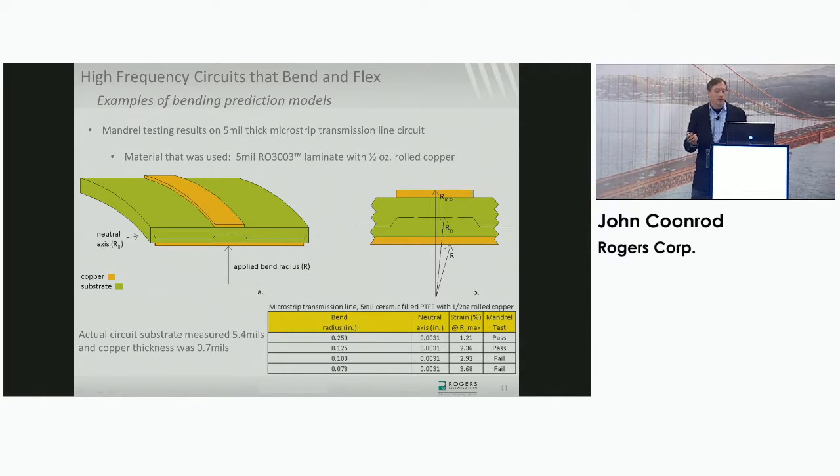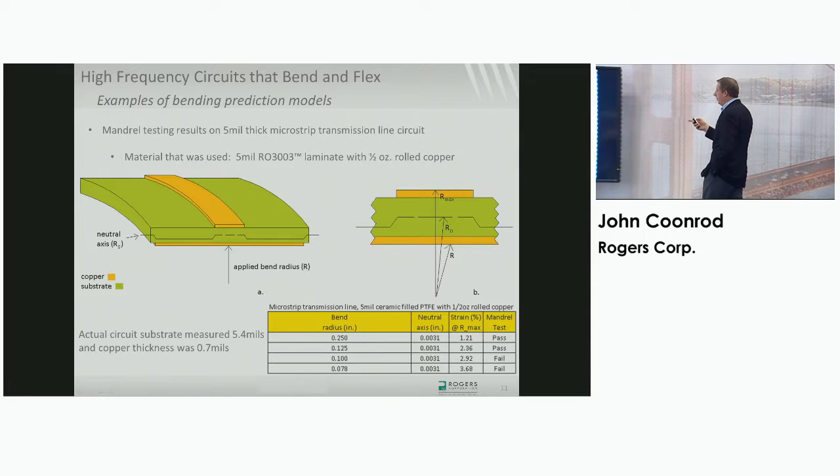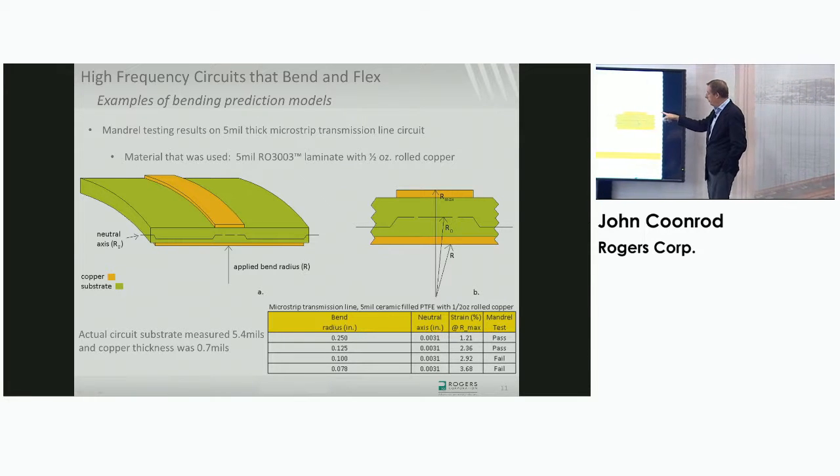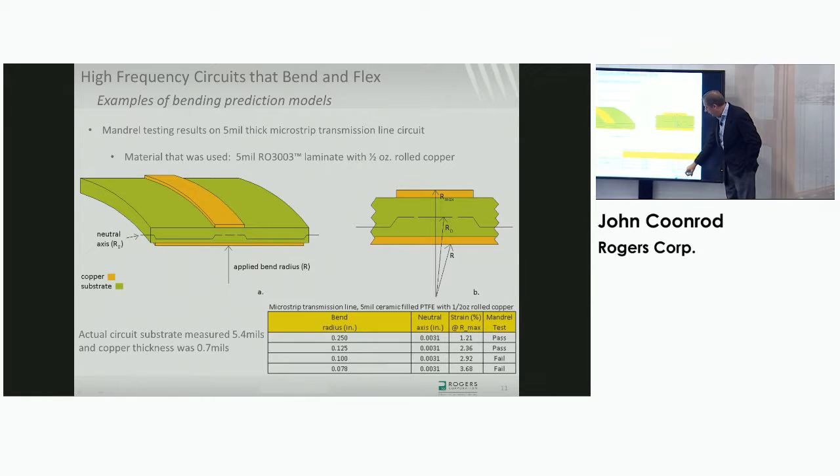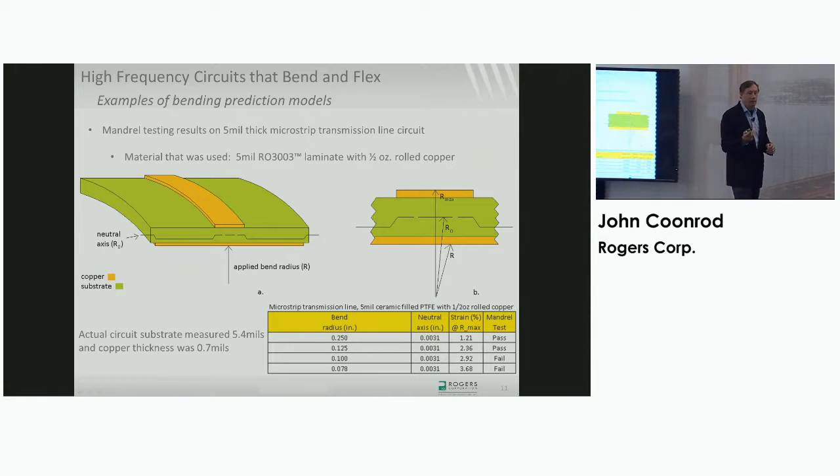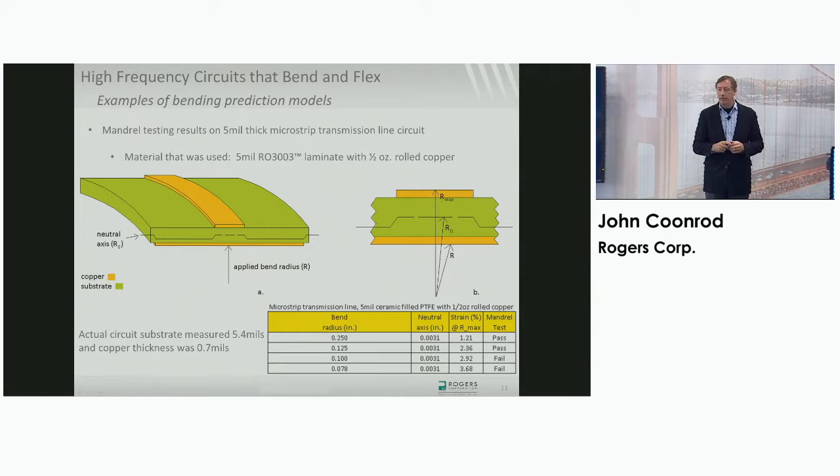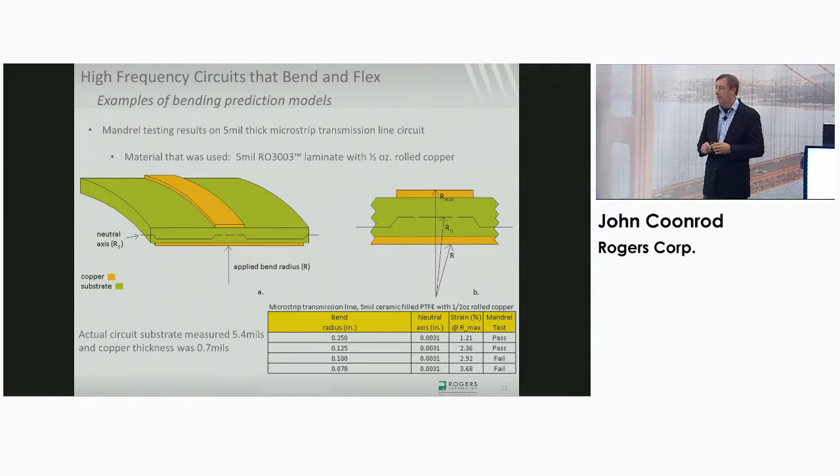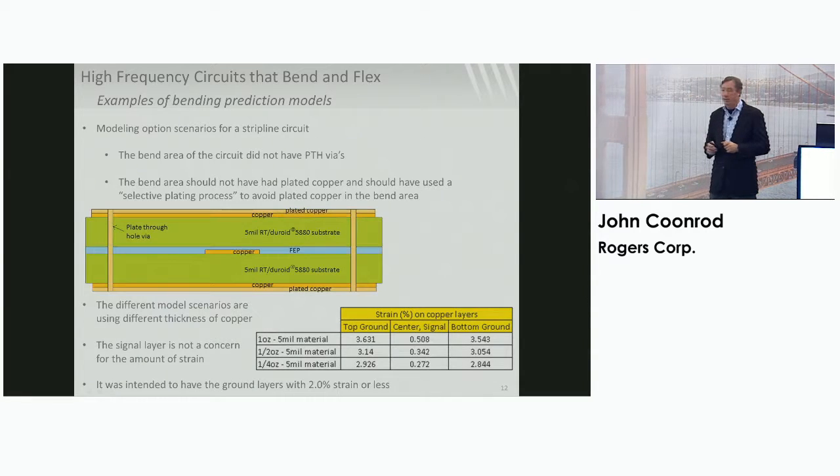Running out of time, so I'm going to speed up just a hair. Looking at this same microstrip transmission line and then looking at some models. This is my model strain calculation. This is a bend radius that I applied by a mandrel. You can see basically as you get to a smaller bend radius, of course the strain is going to increase. You can also see where I had copper fracturing was actually beyond 2%. So the 2% number, as a rule of thumb, is actually a pretty good number, but you can violate that a little bit.